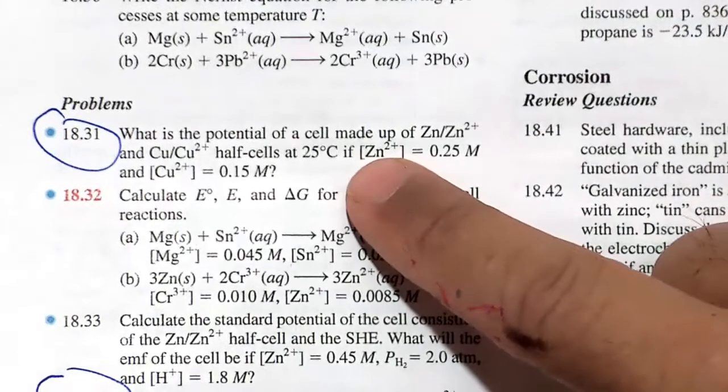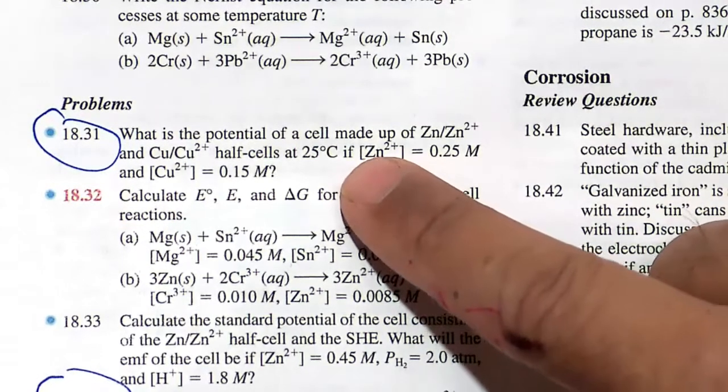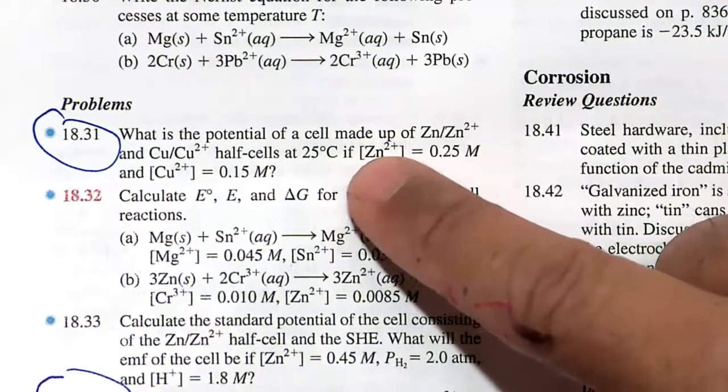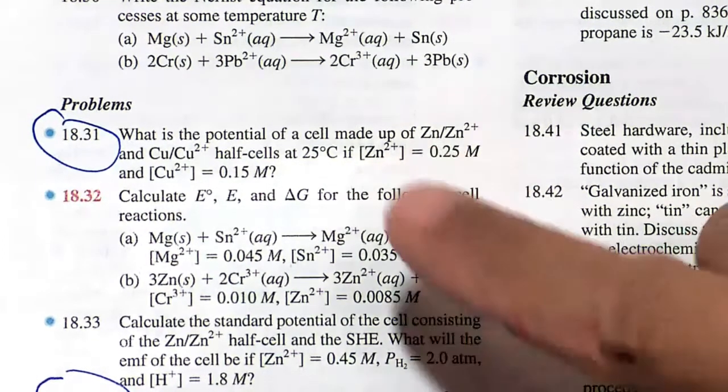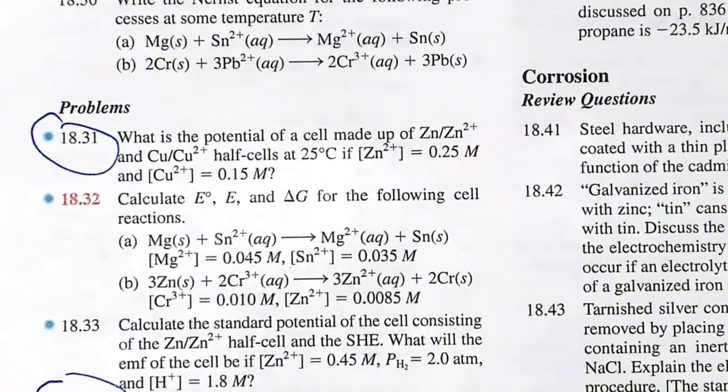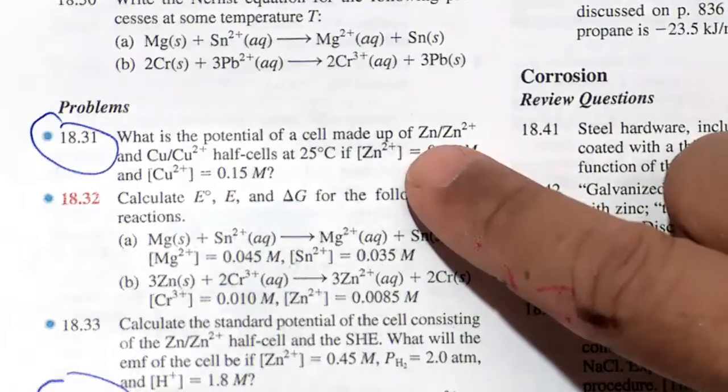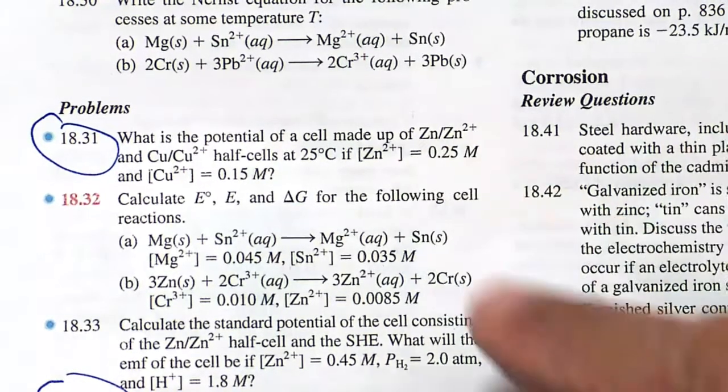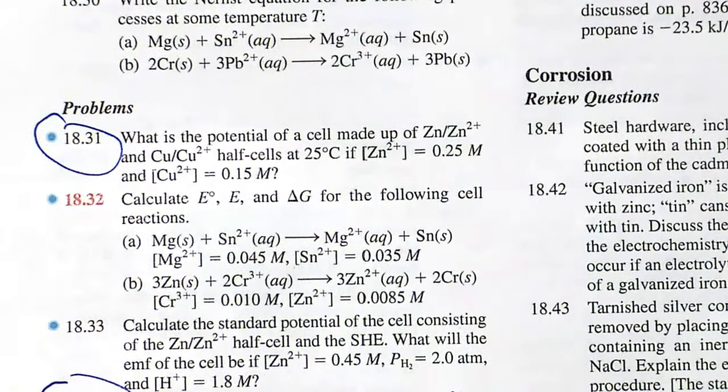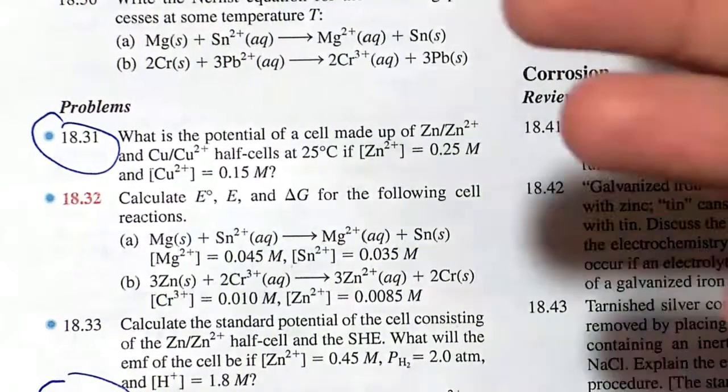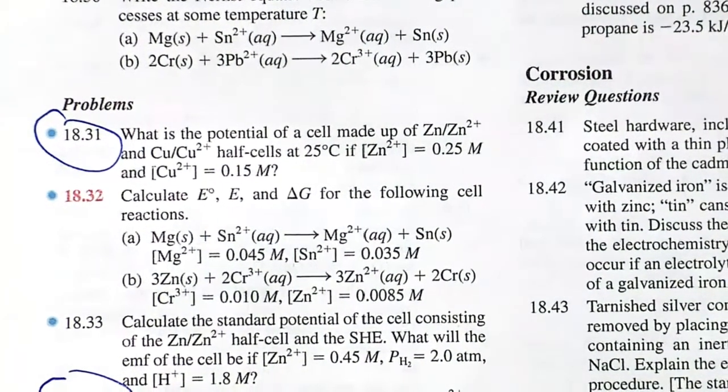In this video we will discuss half reactions and joining them together to form a full redox couple. A battery or any electrochemical cell will consist of a cathode, which is where reduction occurs, and an anode, which is where oxidation occurs.